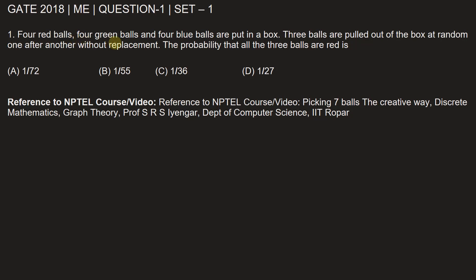Four red balls, four green balls, and four blue balls are put in a box. Three balls are pulled out of the box at random one after another without replacement. The probability that all three balls are red is — we are given four options and we need to choose which option represents the correct probability.